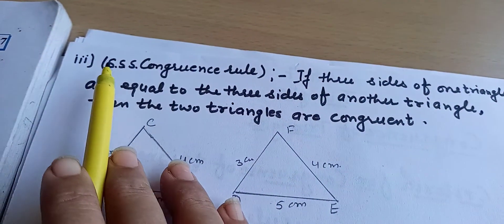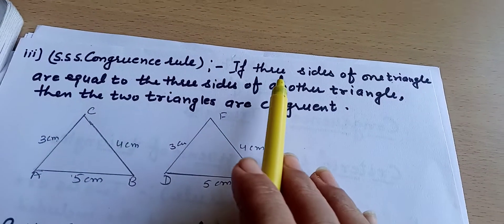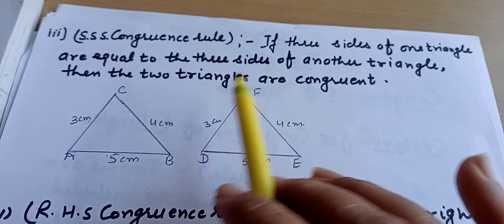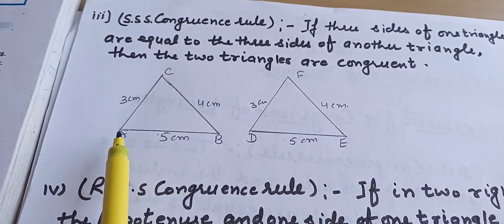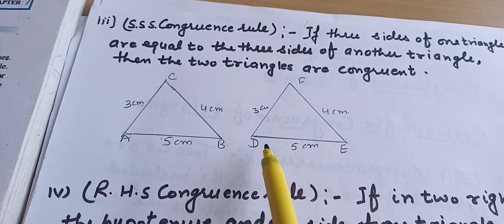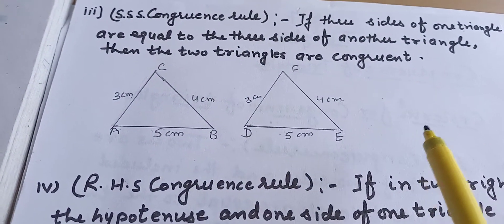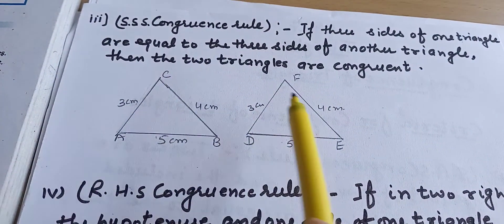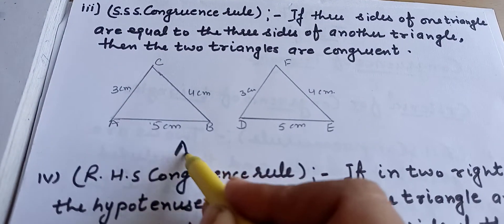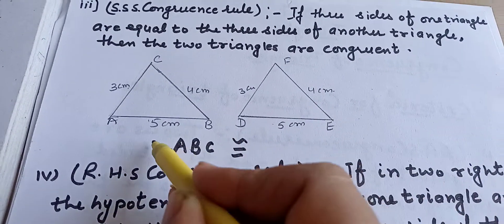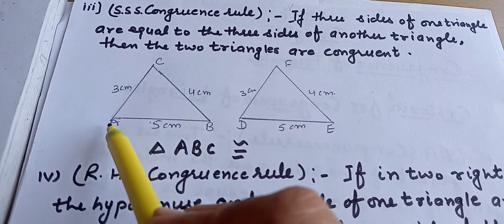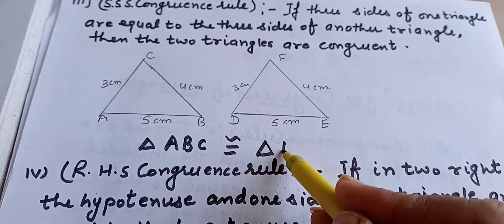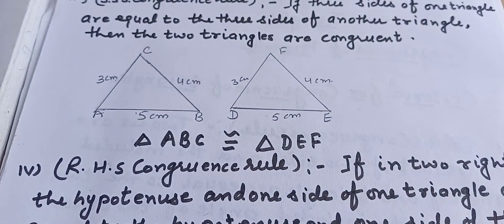Our third criteria is the SSS congruence rule. If three sides of one triangle are equal to the three sides of another triangle, then the triangles are congruent. Here, for triangles ABC and DEF: AB = DE, AC = DF, and BC = EF. Therefore, triangle ABC is congruent to triangle DEF.